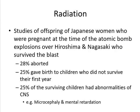Regarding radiation studies, studies of Japanese women who were pregnant at the time of the atomic bomb exposure in Hiroshima and Nagasaki showed that around 28 percent of these pregnant ladies were affected. Around 25 percent gave birth to children who did not survive their first year. And 25 percent of surviving children had severe central nervous system abnormalities including microcephaly and mental retardation.